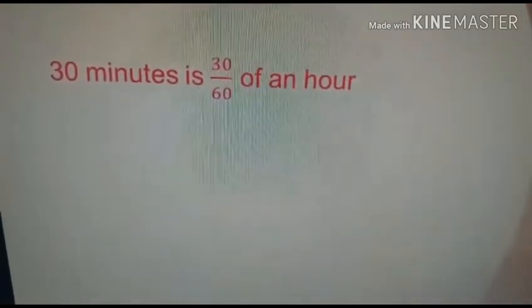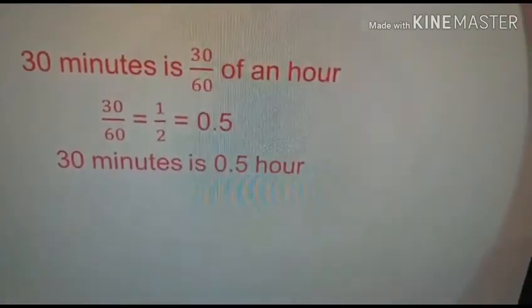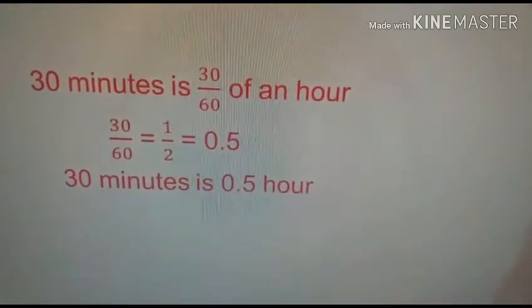30 over 60, we can cancel the zeros. Then we will get 3 over 6 is same as 1 over 2. The decimal form is 0.5, so 30 minutes is 0.5 of an hour.